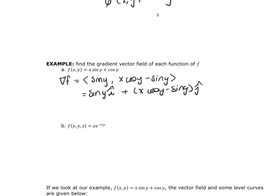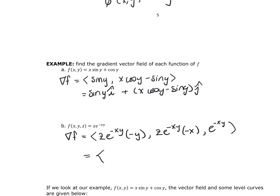For the R3 gradient vector field, with respect to x we get z·e^(-xy) times the derivative of -xy, which is -y, giving -yz·e^(-xy). With respect to y, we get z·e^(-xy) times -x, giving -xz·e^(-xy). With respect to z, e^(-xy) is the constant, giving e^(-xy). Rewriting cleanly: the gradient is (-yz·e^(-xy), -xz·e^(-xy), e^(-xy)).